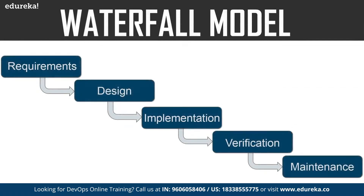Before DevOps, we had the waterfall model of software development. This model was a straightforward, linear model that followed a top-down approach, as you can see in this diagram. It had various phases starting with requirement gathering and analysis — in this phase, you gather the requirements from the client and analyze them. Once clear with the requirements, you proceed to the design phase, where you think about how the software will look and prepare a blueprint. The next phase is implementation, where you begin coding the application.